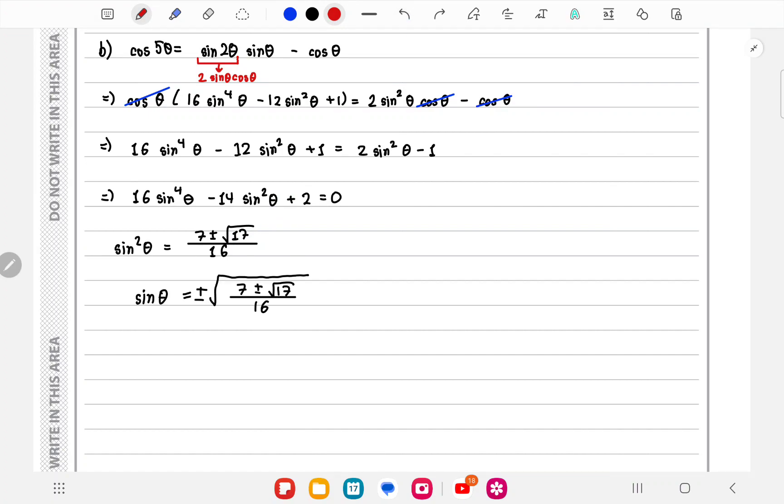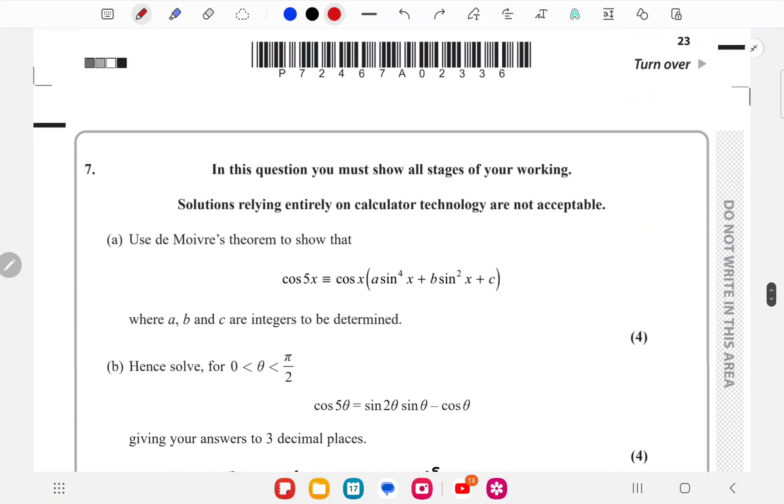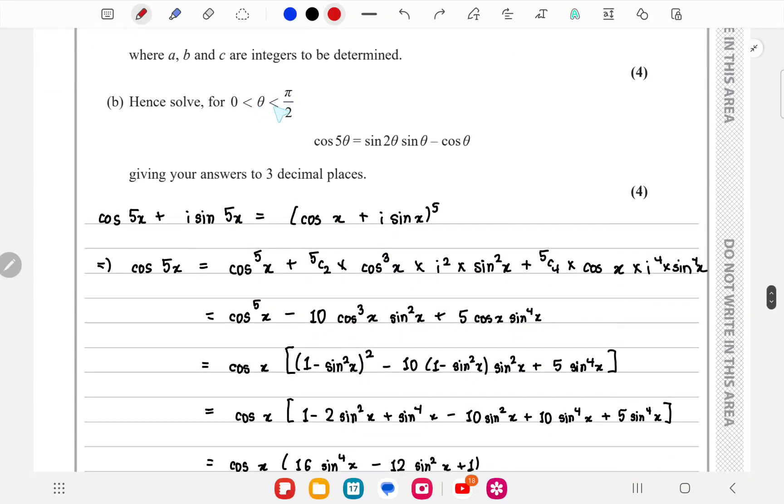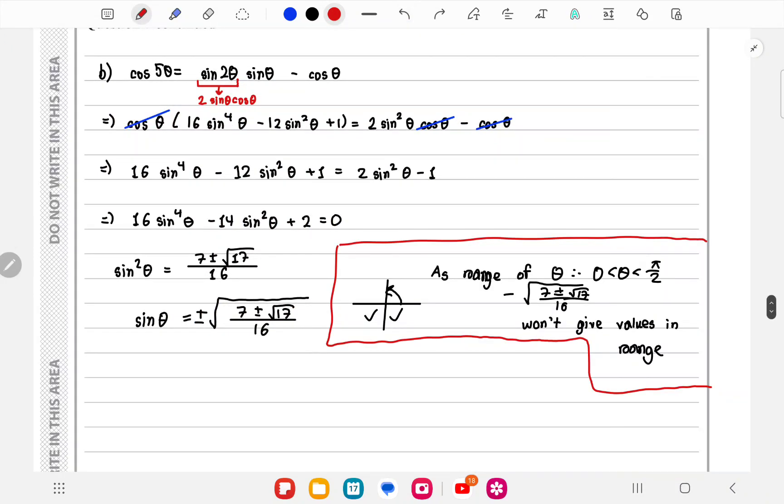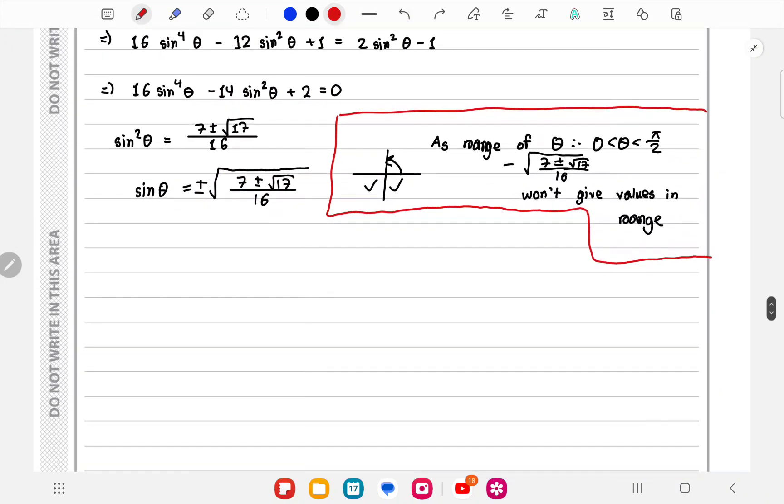Now sin θ will be ±√[(7 ± √17) / 16]. However, we are given that theta is from 0 to π/2. Now if sin θ was negative, it would lie in the third and fourth quadrant, which is outside the range of values given.